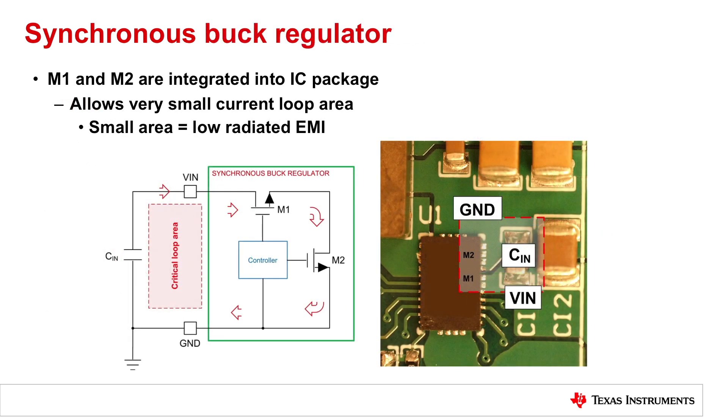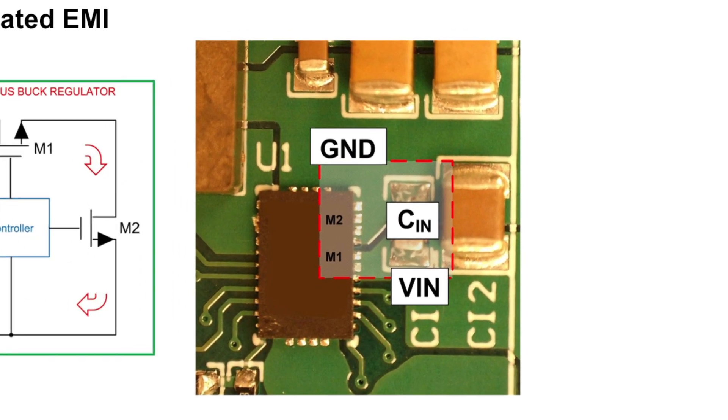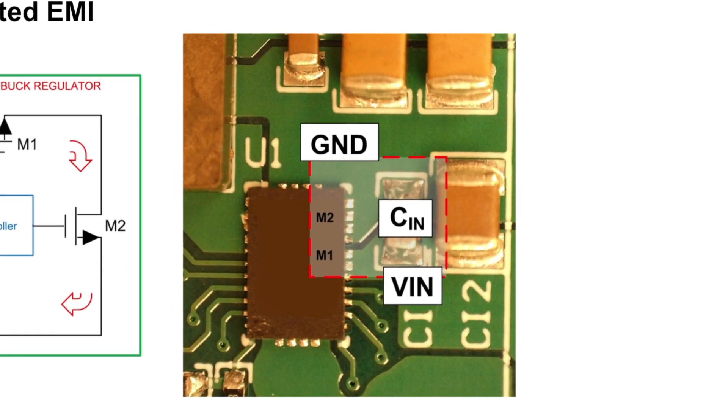Here's a typical example of a layout for a synchronous converter. On the right-hand side, you see the IC itself with the two power MOSFETs inside, and you see the input capacitor right next to it physically very close. By moving the input capacitor as close as possible to the IC, that current loop area is going to be very small. In this case, the dotted red line signifies the critical loop area that we're trying to minimize.